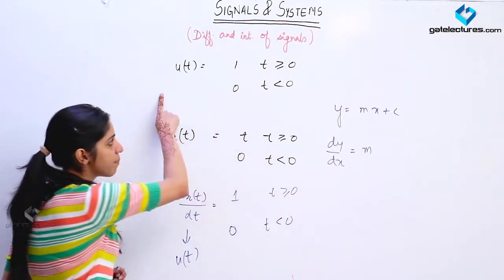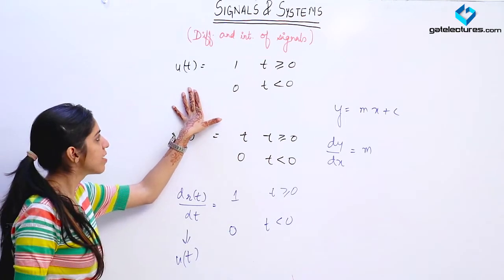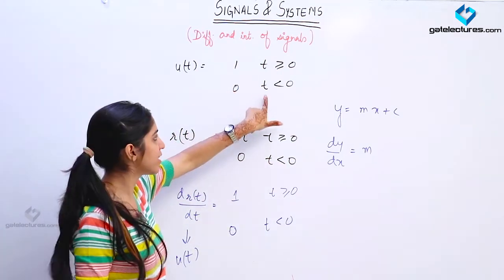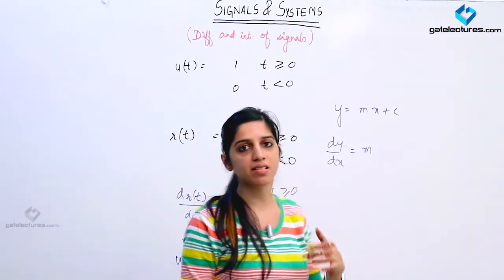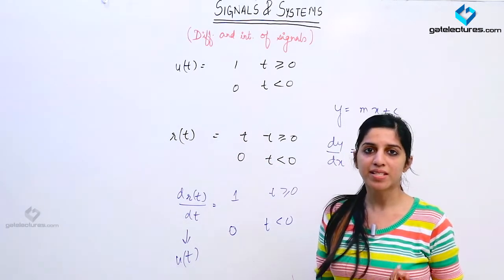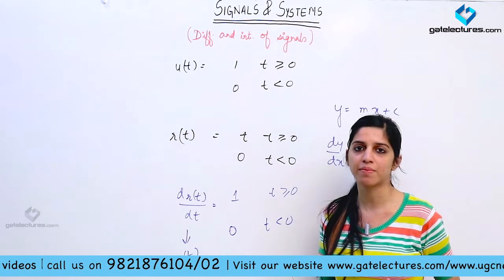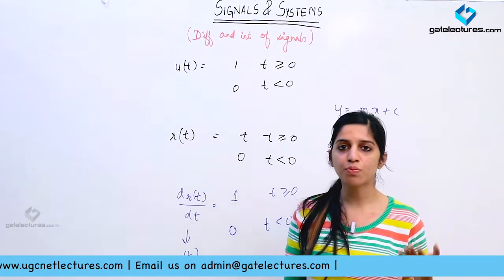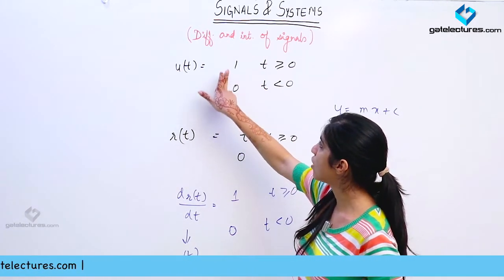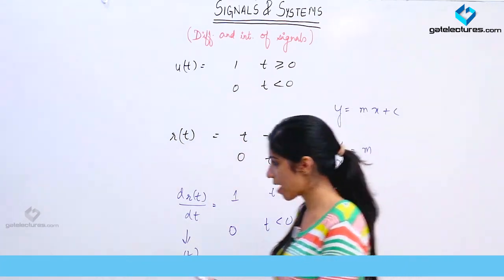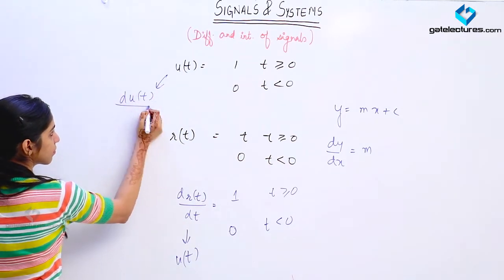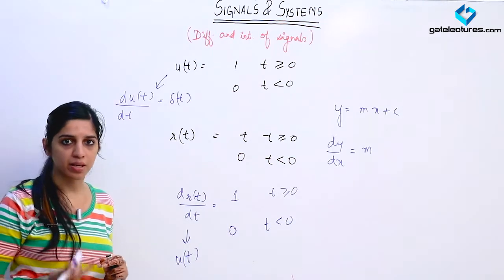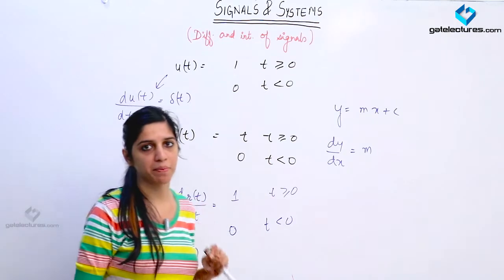Now, if I just differentiate the unit step signal — this function is only a step change, only a discontinuity at t = 0, nothing else. So to represent a discontinuity, when I differentiate this signal, I am going to obtain a unit impulse. The impulse is just representing an instance of time — it occurs only at t = 0 and has infinite value. Infinite value signifies that this function jumped from value 0 to 1. So when I differentiate unit step, I obtain unit impulse, where the change in step size is going to define the area — the size — of the impulse.